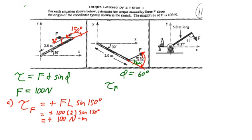So the torque produced by F is again going to be positive clockwise, the force times the distance times the sine of the angle which is 60 degrees. So we'll take our 100 times 2 times the sine of 60 and that gives us 173 Newton meters.